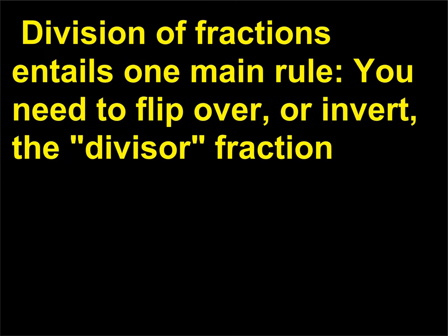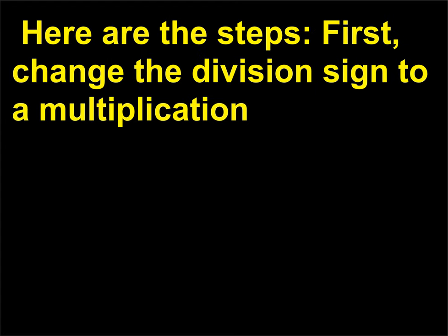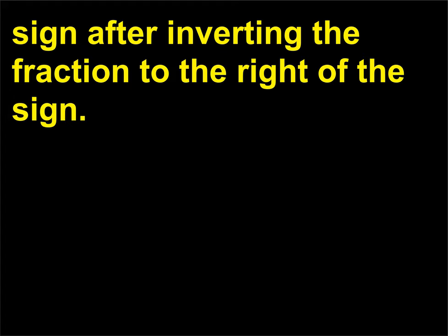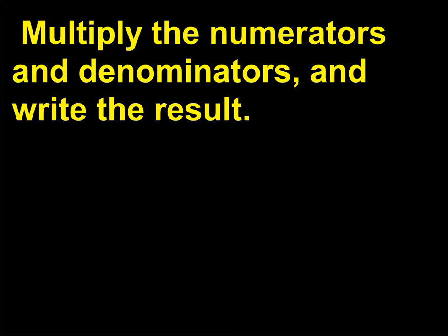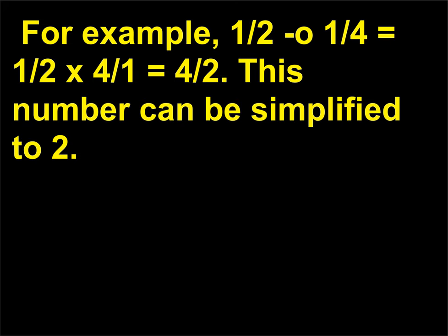Division of fractions entails one main rule: you need to flip over, or invert, the divisor fraction (the fraction on the bottom) to get the result — this is also called the reciprocal of the fraction. Here are the steps: first, change the division sign to a multiplication sign after inverting the fraction to the right of the sign. Multiply the numerators and denominators and write the result. You can then simplify or reduce the fraction if needed. For example, 1/2 ÷ 1/4 equals 1/2 × 4/1 equals 4/2, which simplifies to 2.